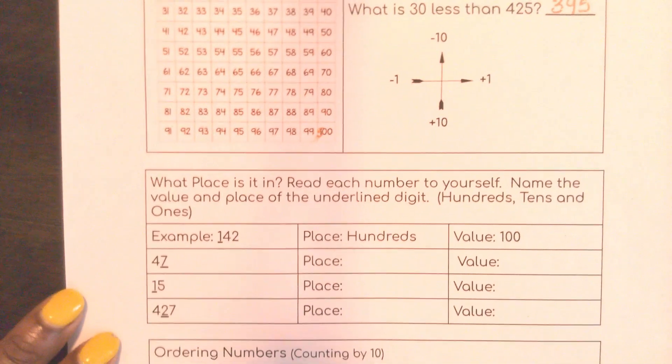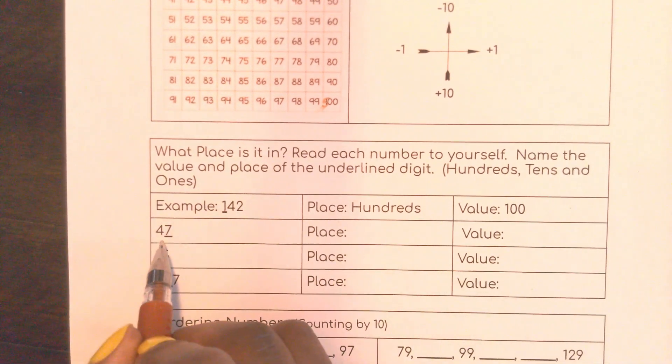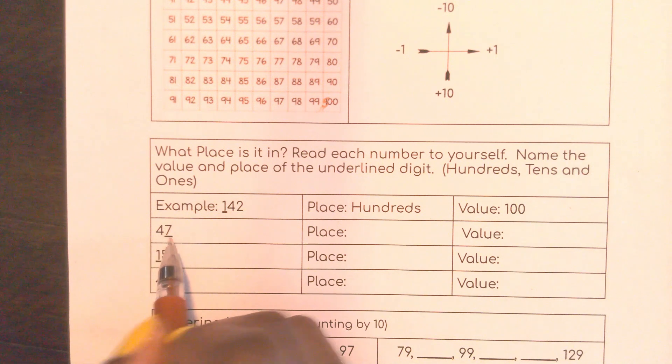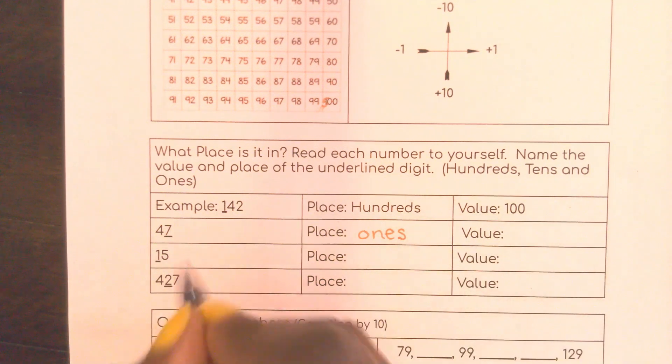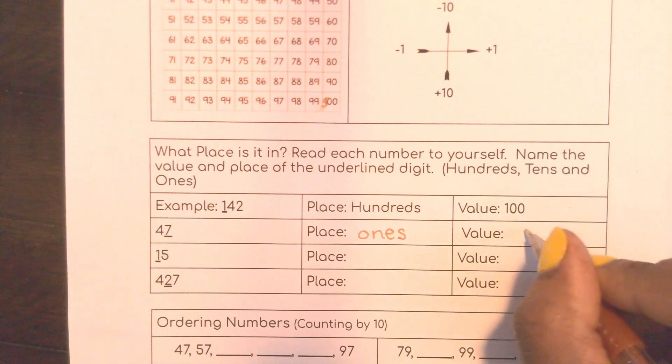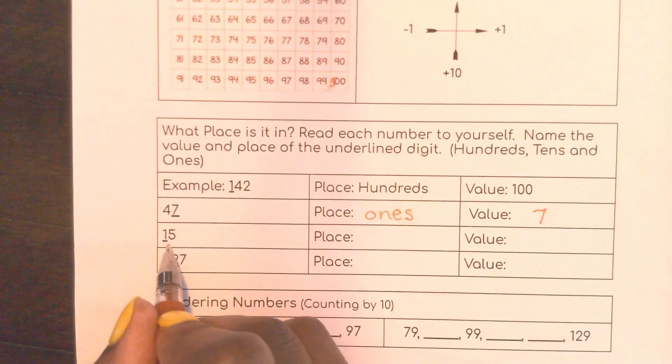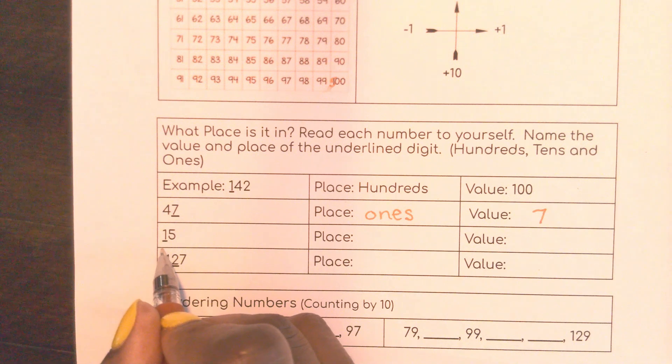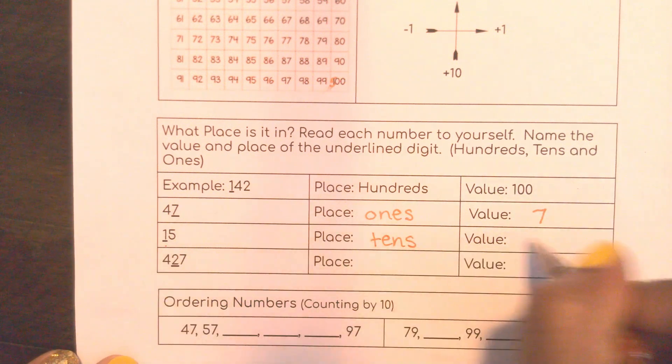When I move down to the place in the value, if I see this number 47, 40 I know is a 10 and 7 is just a 1. So this is in the 1s place. And the value of that 7 is 7. Here I have 15, which is a 10 number. So I know a 10 number is 10 and some 1s. So here's the 10 in the 10s place. The value is 10.